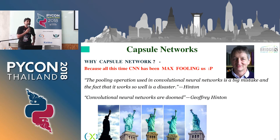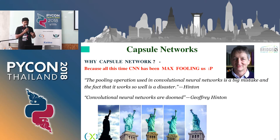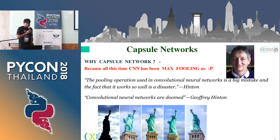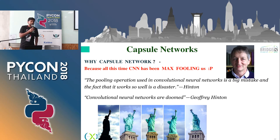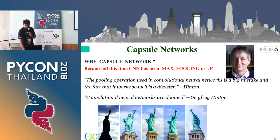Now I'm coming to the main topic of this talk — capsule networks. We went from the regular neural network to CNN, and now we are coming to the capsule network. Geoffrey Hinton — the father of everything in artificial neural networks — invented the capsule networks. I quote him: 'The pooling operation in convolutional neural networks is a big mistake, and the fact that it works so well is a disaster.' I put this image of the Statue of Liberty — if a normal human person sees images of it from any angle, they will definitely identify it. But the machine will not. The machine does not have this kind of intelligence. Max pooling is the culprit.